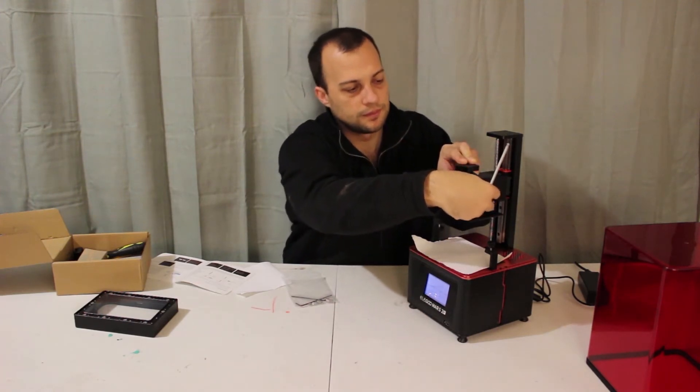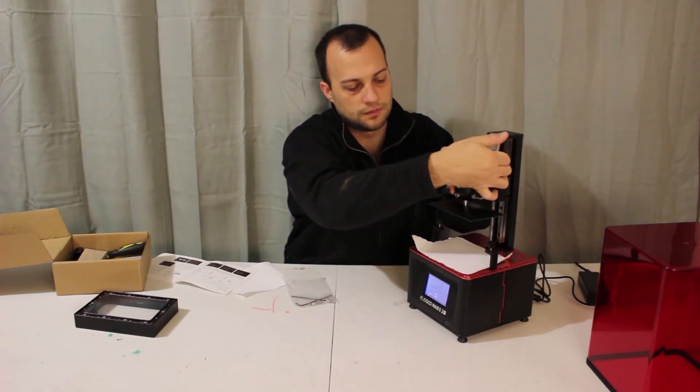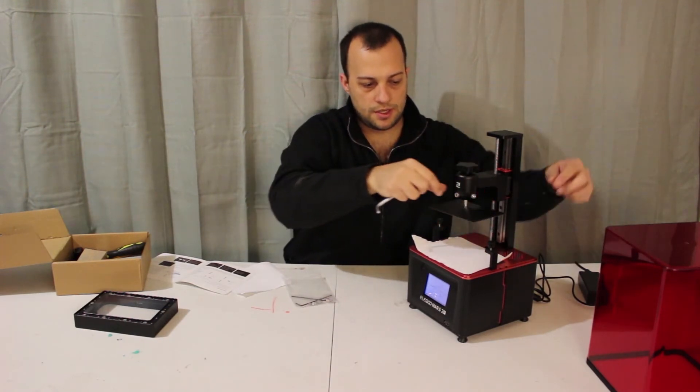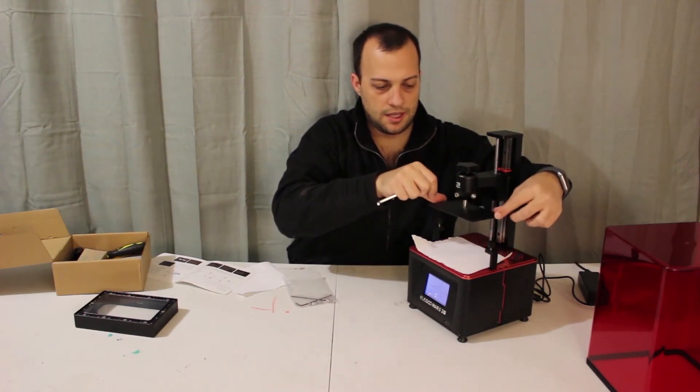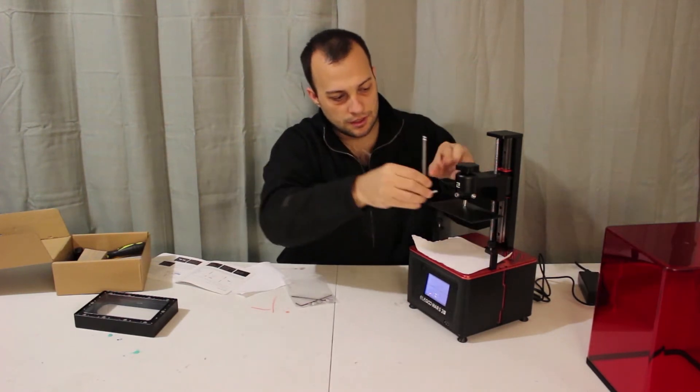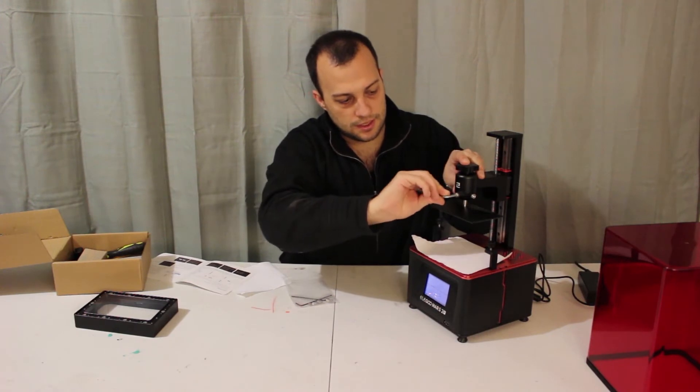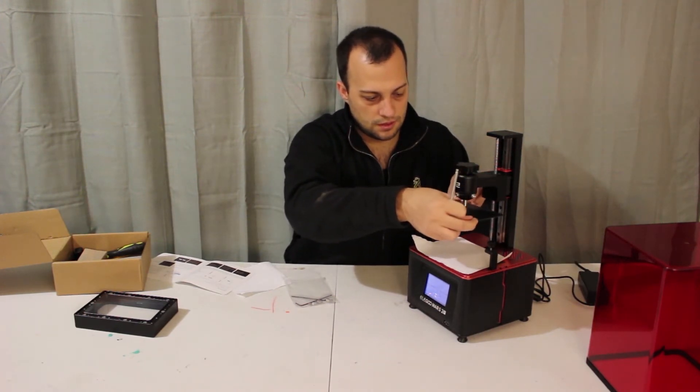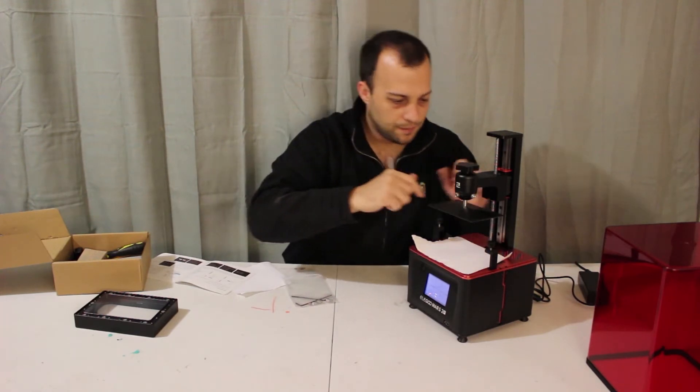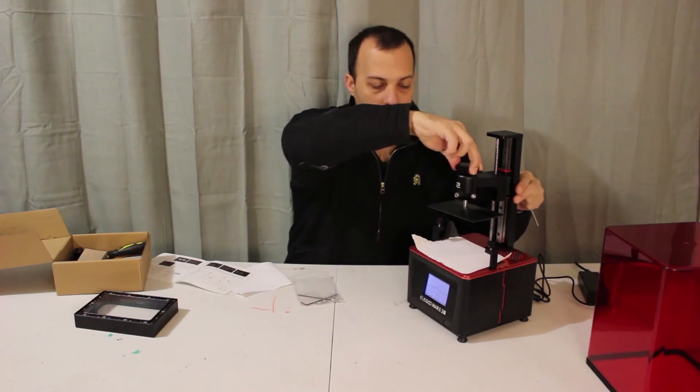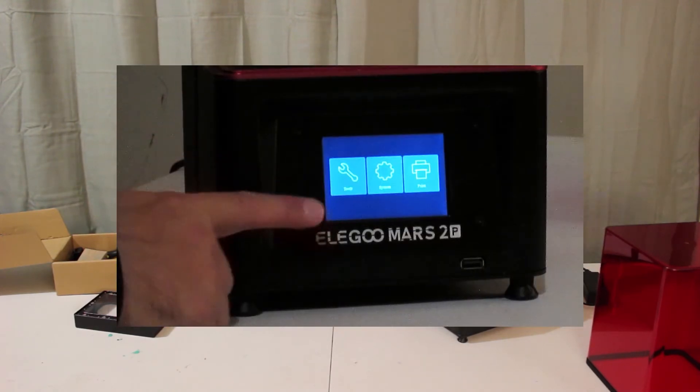You see how the build plate dropped, that means now it can move around, that's good, you want it to be able to move around. This is how we're going to set our build plate, we're going to loosen the screws, and we're just going to try to get it lined up. Now that we have loosened it and the build plate can move around while it's tight, let's go ahead and look at the interface.